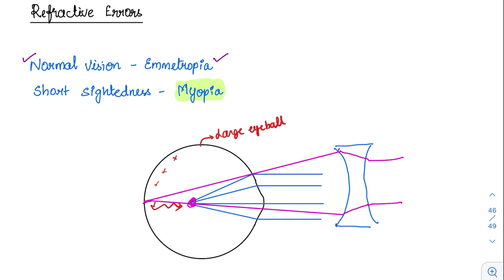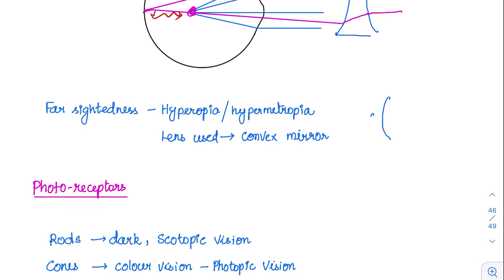For hypermetropia or farsightedness, it is just the opposite — the image is focused behind the retina. So we have to converge the rays much earlier. The type of lens preferred is a convex lens, so that the rays can be focused at the point where the retina is present.